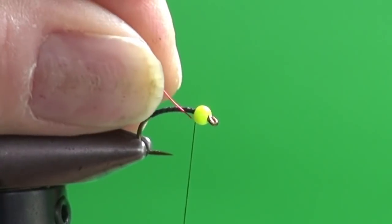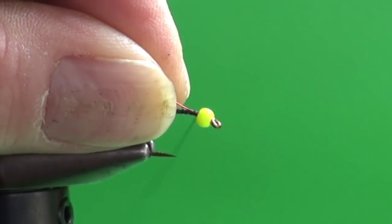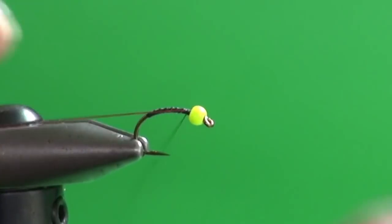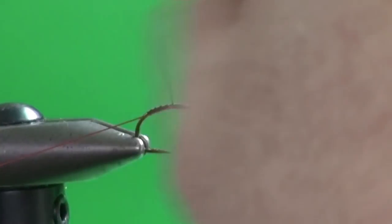We're going to place that. Actually, if you stab it into the bead a little bit, it'll help hold it in place. And we're just going to secure that down the shank.